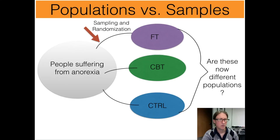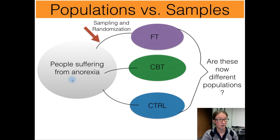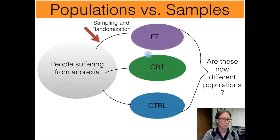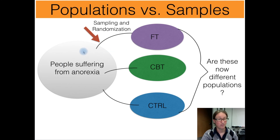It can help to solidify this idea about where statistical tests come in if we take a look at our anorexia example in a different format — basically as a flowchart. What's happened in this experiment is we start out with a population of people suffering from anorexia, and then we sample from that population. We're only taking a subset of people from that population, and we need to do this randomly, so that we're not putting everyone from the same country into family therapy and people from a different country into cognitive behavioral therapy. So our samples need to be random from our population.